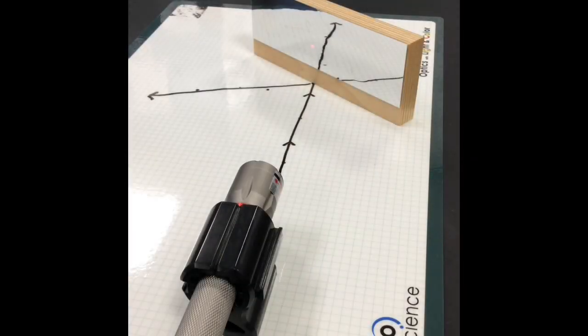After you've drawn the incoming ray and the outgoing ray, we're going to make some measurements, but first we need to mark where the mirror was.